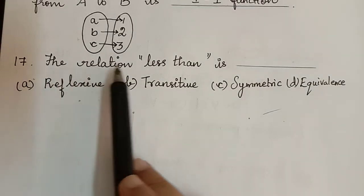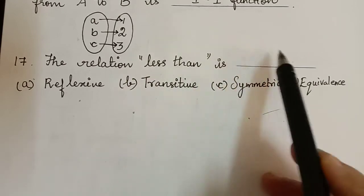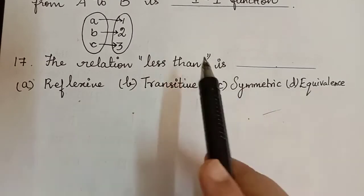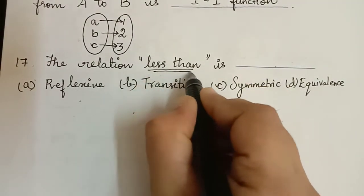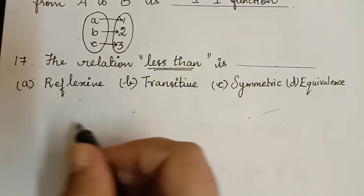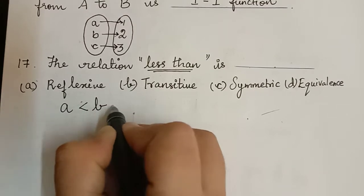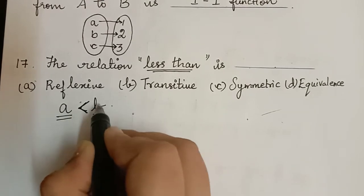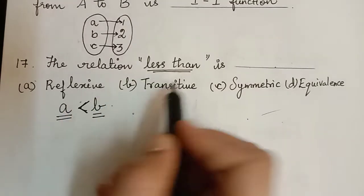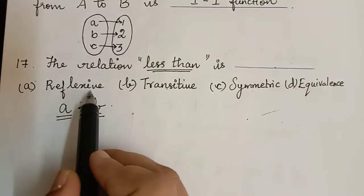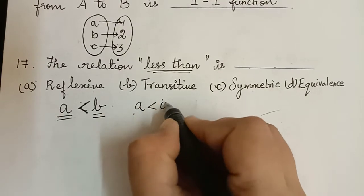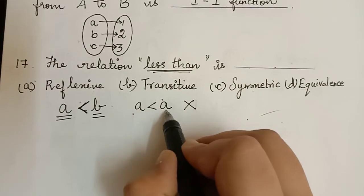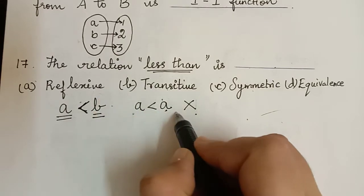The next question is: the relation 'less than' is what? The options are: reflexive, transitive, symmetric, equivalence. So this less than relation — we have A less than B — and we have to check whether it is reflexive, transitive, symmetric, or equivalence. Reflexive means A has to be lesser than A itself, but this is not possible because an element cannot be lesser than itself. So it is not reflexive.